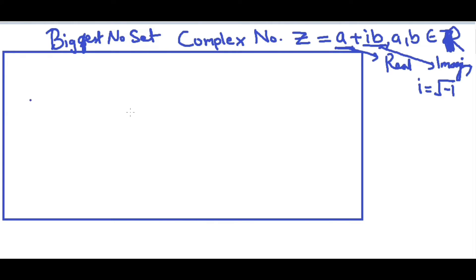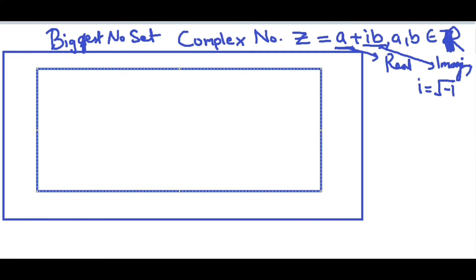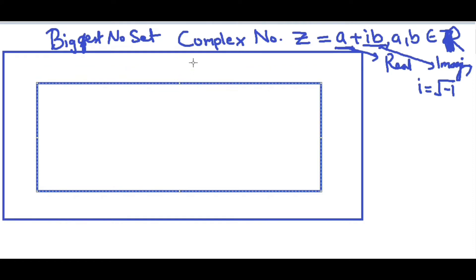Sorry for my handwriting. Let's talk about numbers which are inside the complex set. Another number set inside it is the real number set, denoted with capital letter R or the printed letter ℝ. It contains all the numbers which are represented on the number line.